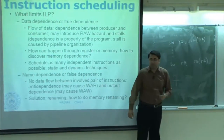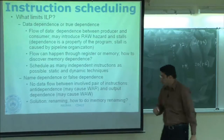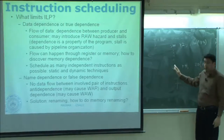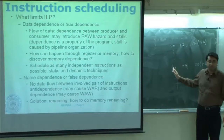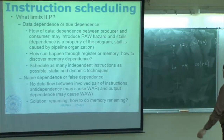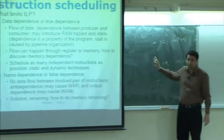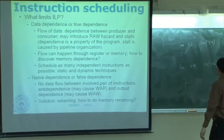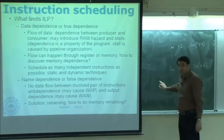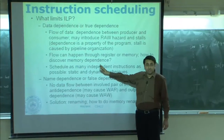Memory dependence clearly hinders ILP. Without any other machinery, you have to be conservative: whenever you find a load, you say you cannot execute it until all stores before it have been executed. That guarantees correctness but means you will not get as much ILP as you would have if you could execute the load earlier. We will come up with a more sophisticated solution. But is the memory dependence problem clear to everybody?